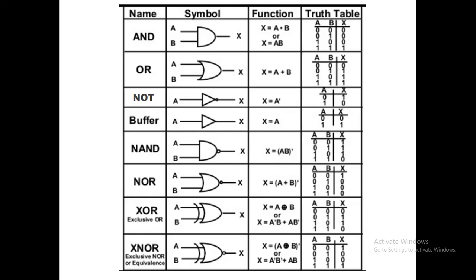One more gate is the buffer. This buffer gate has only one input A and one output X. The Boolean expression is X = A — whatever input is provided, that will be the output. If A is 0, X is 0; if A is 1, X is 1. The same logic applies here as with the other gates explained, but the output is represented as X.